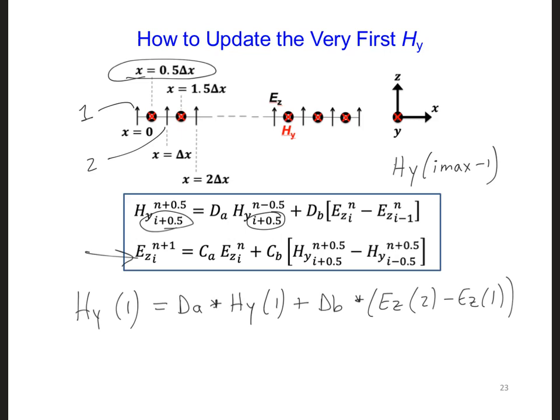Now if you look at the first EZ in the grid, you may notice a problem. Can we implement the update equation for EZ on the first EZ in our grid?